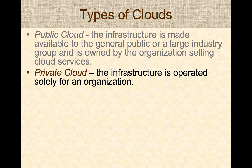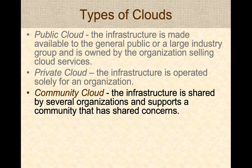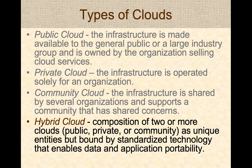Private clouds are cloud computing infrastructures solely maintained for a given organization — you have to be part of that company to use them. Community clouds are shared among different organizations, typically maintained by universities. Hybrid clouds are a composition of two different cloud types, combining features not available from a single cloud type alone.